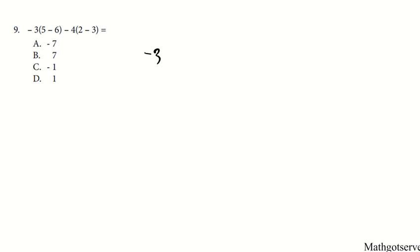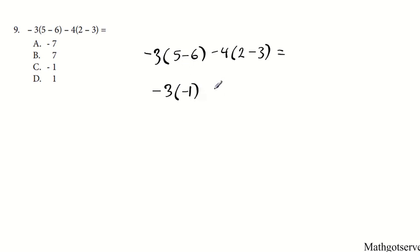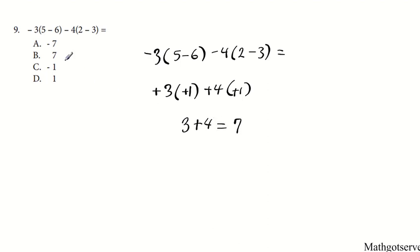Question 9: we have negative 3 times (5 minus 6) minus 4 times (2 minus 3). Using the order of operations, deal with the parentheses first: 5 minus 6 is negative 1; and 2 minus 3 is also negative 1. Then negative 3 times negative 1 — same signs, slash and dash — becomes positive 3. Minus 4 times negative 1 becomes positive 4. So 3 plus 4 equals 7. The answer to number 9 is B.